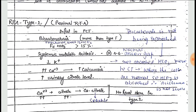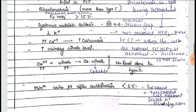In Fanconi syndrome, there is a generalized defect in the PCT, so all absorption occurring at the PCT level is disturbed, leading to glycosuria, aminoaciduria, bicarbonaturia, hypercalciuria, phosphaturia, and citraturea. The bicarbonate not absorbed by the PCT is presented to the collecting tubules where it is absorbed, so the acidemia in Type 2 is not as severe as in Type 1.